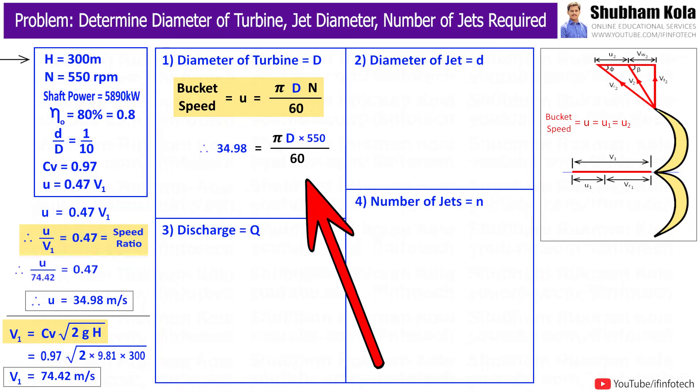To calculate D, we have all the values. Therefore, by calculating this, we got diameter of turbine D equal to 1.2146 meter.